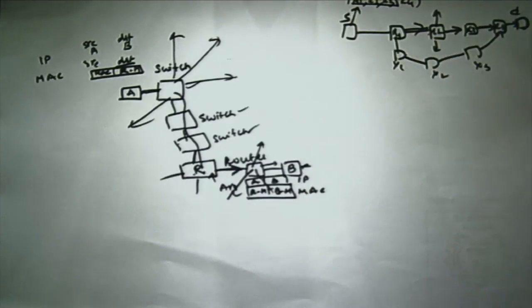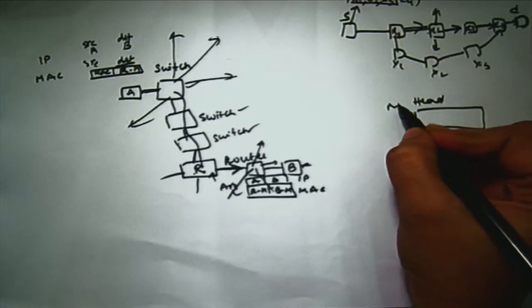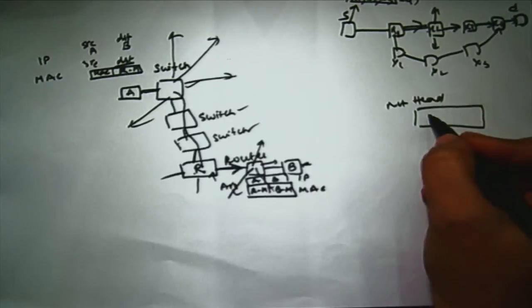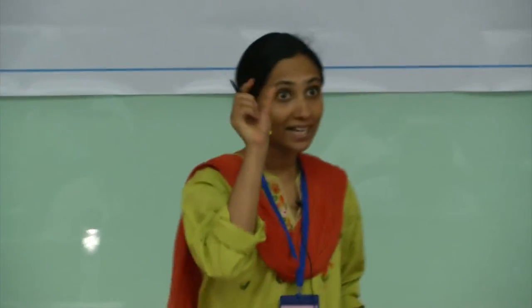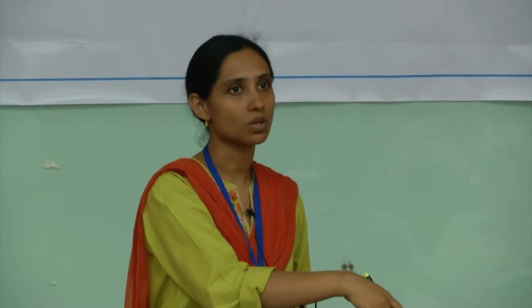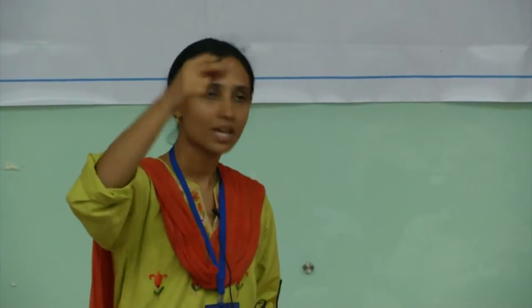How does router R1 know to forward only to R2 and not X1 or X2? The source route is carried in the header of the packet. In the network layer header, the entire path — R1, R2, R3, R4, and the destination — is specified. A router in destination-based routing looks at a routing table; in source-based routing, the router looks at the header, figures out the next hop, and forwards based on that without consulting any routing table.